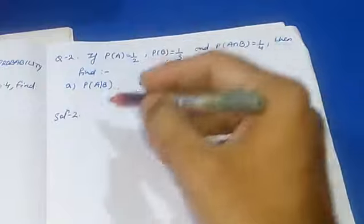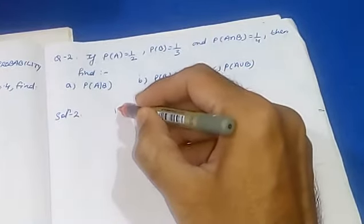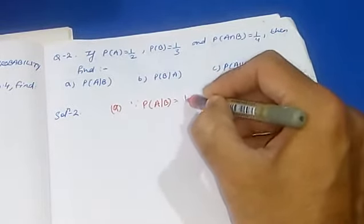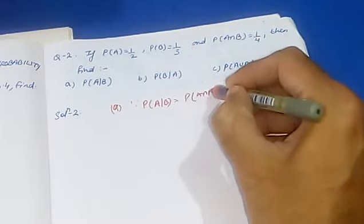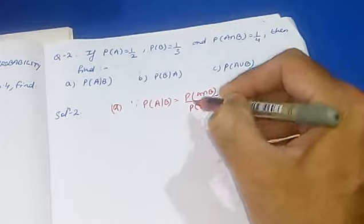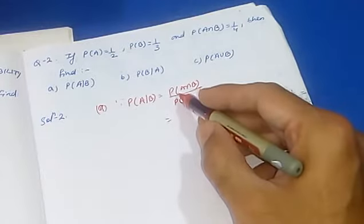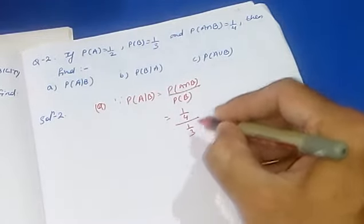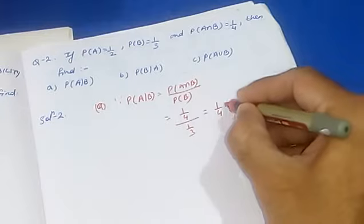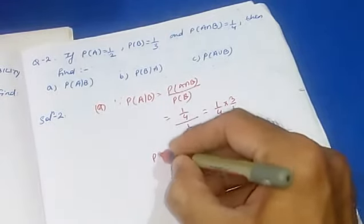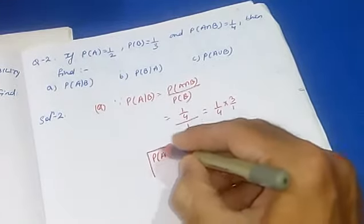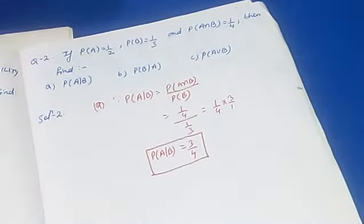We will start with part 1. We know that probability of A given B is equal to probability of A intersection B divided by probability of B, because here the event B has already happened, so we will apply this formula. Probability of A intersection B is given as 1 by 4, divided by probability of B which is 1 by 3. Solving this: 1 by 4 into 3 by 1, and we get probability of A given B is equal to 3 by 4.